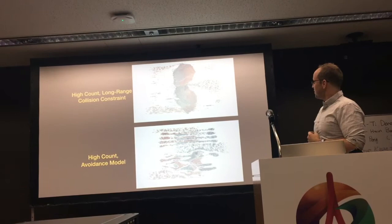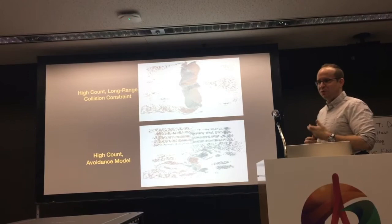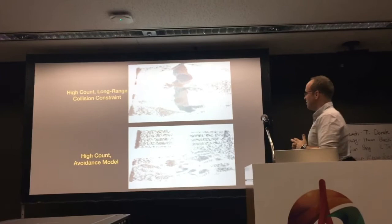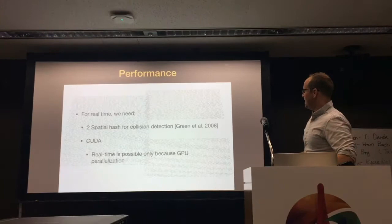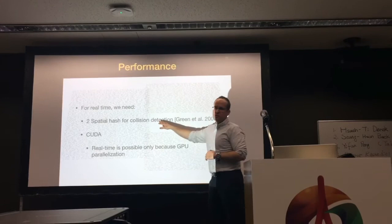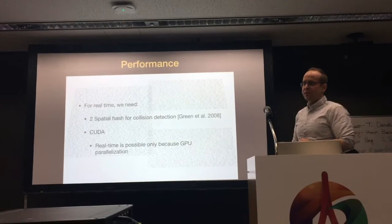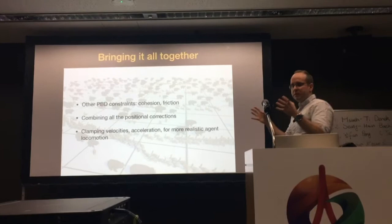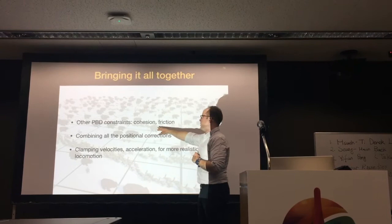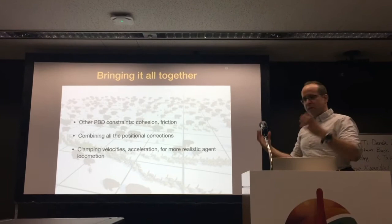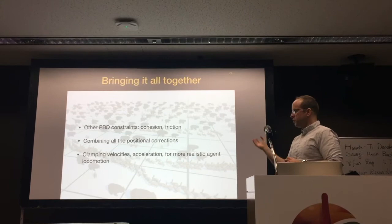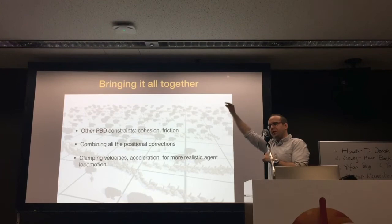To make this work in real-time, we use spatial hashing for collision detection and CUDA — without CUDA it would not be real-time even for hundreds of agents. Since we're using PBD, a well-known framework for physics-based animation, we can also use other PBD constraints like cohesion and friction. Cohesion makes agents move more as one; friction slows them down as they get closer to each other. We combine all the position corrections and clamp velocities so agents don't fire away.